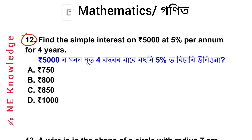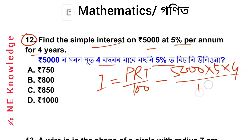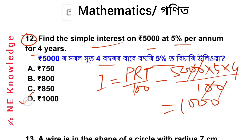Question number 12: Find the simple interest on 5000 at 5% per annum for 4 years. The simple interest formula is PRT/100. So SI = 5000 × 5 × 4 / 100 = 20 × 5000 / 100 = 1000. Option number D, 1000, is correct.